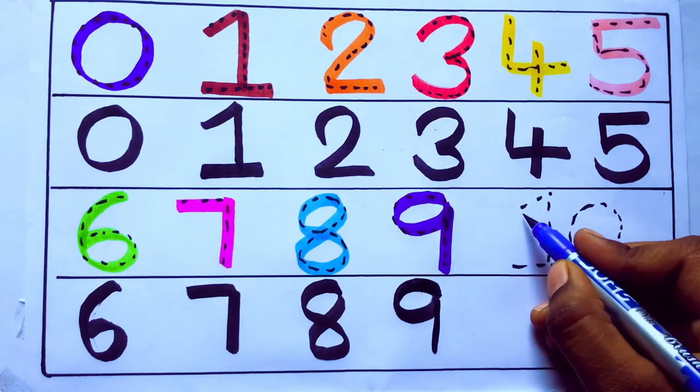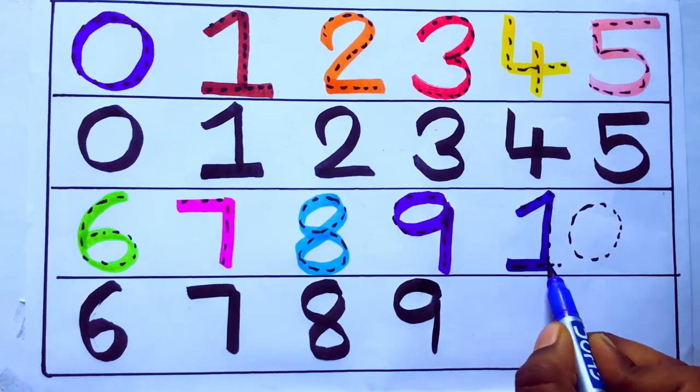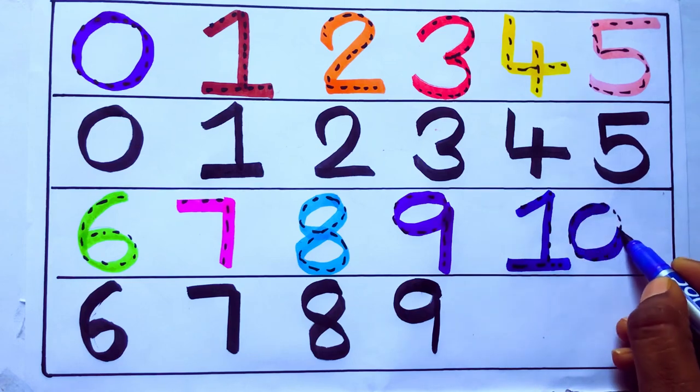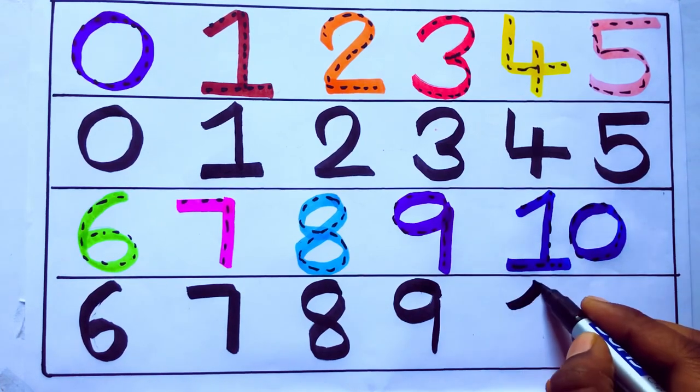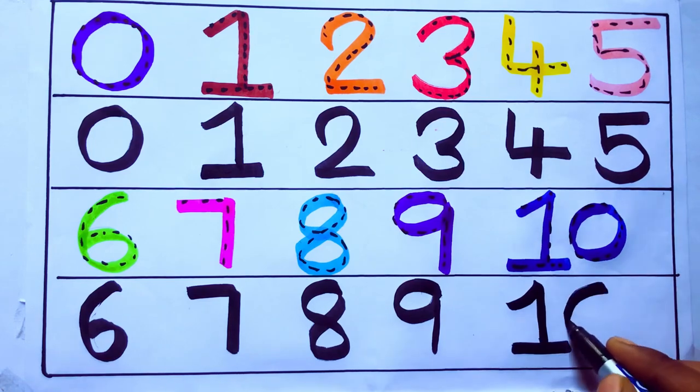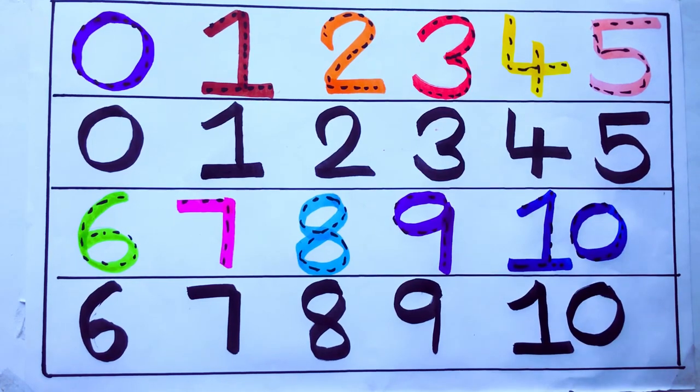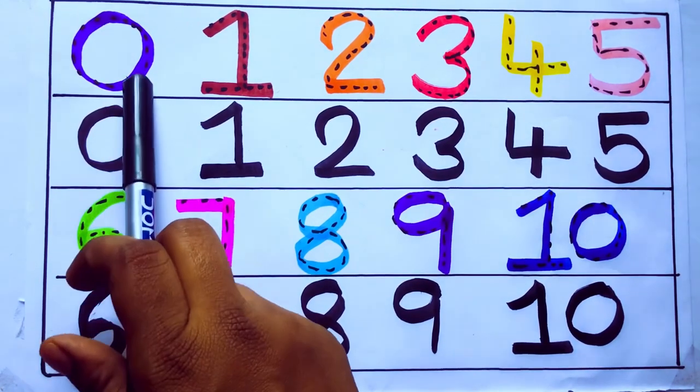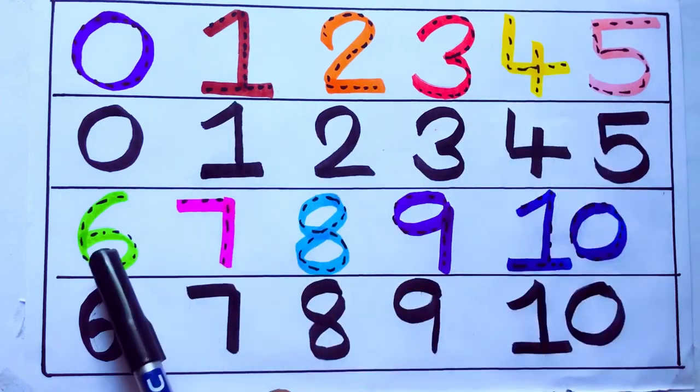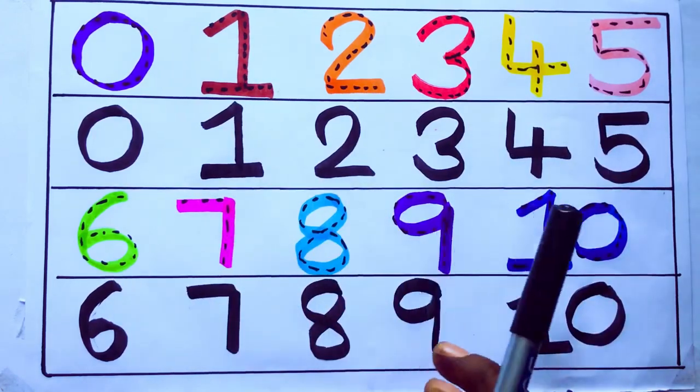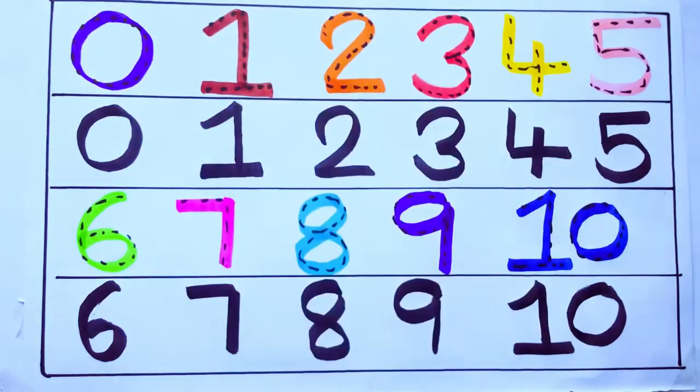Blue color 10, T-E-N, 10. Number 10. Learning numbers: 0, 1, 2, 3, 4, 5, 6, 7, 8, 9, 10. Bye kids!